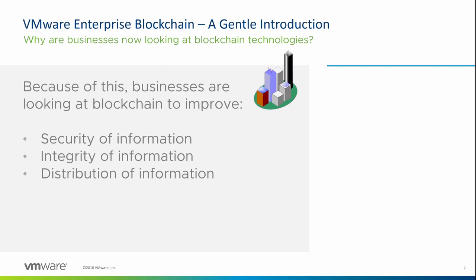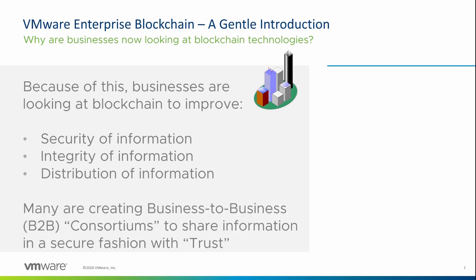Because of that, it's got businesses' attention, because businesses are now looking at blockchain to improve things like security of information, integrity of information, and the distribution of information. And many of them are creating B2B or business-to-business consortiums to share information in a secure fashion with this additional level of trust.